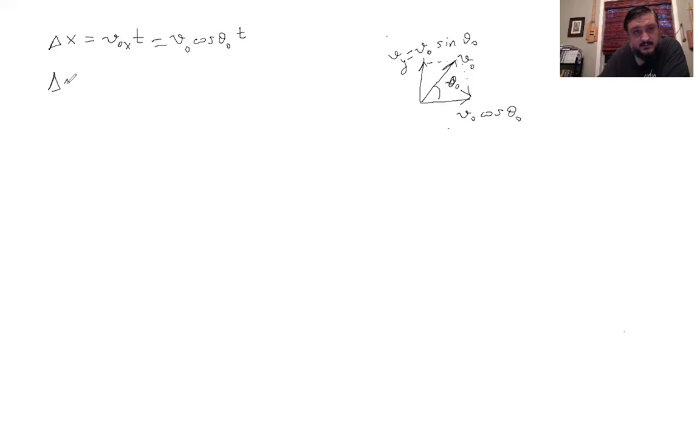How about the displacement in the Y direction? Delta Y. Now we do have acceleration. So besides this term V naught Y T we need the acceleration term, one half A Y T squared. A Y, remember it's negative G. That's from the previous slide. So if I want to write it explicitly, that's equal to V naught sine theta naught T minus one half G T squared.